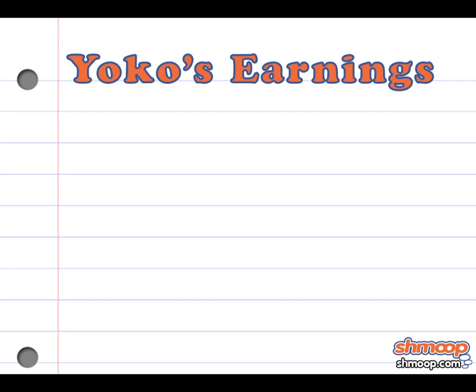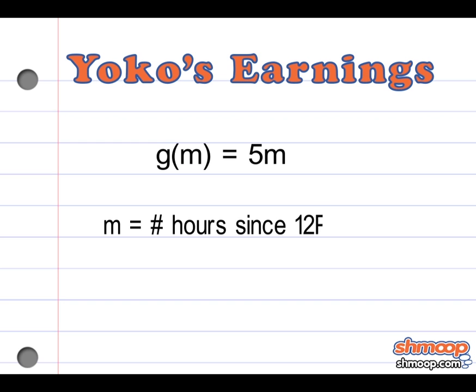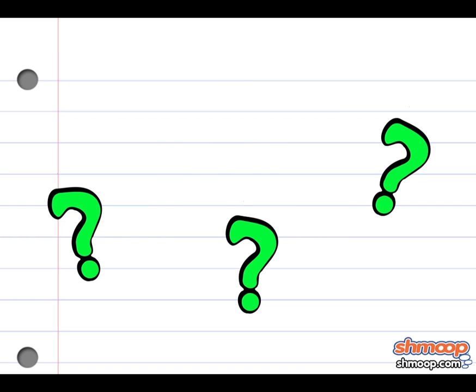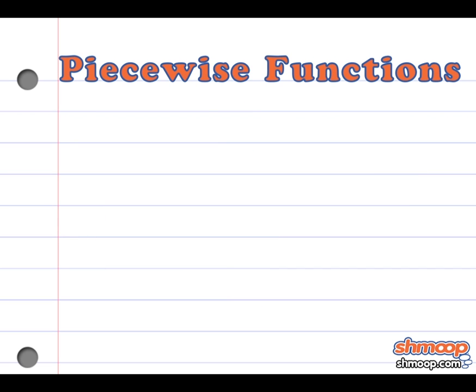Yoko's earnings can be represented by the equation g(m) = 5m, where m equals the number of hours since 12 p.m. How do we combine these two equations in one earnings chart? The answer lies in a piecewise function.